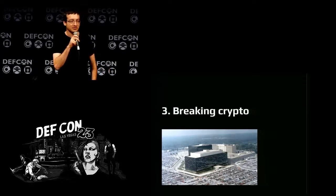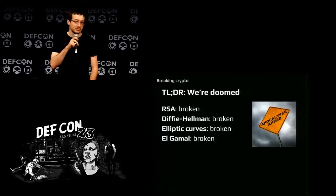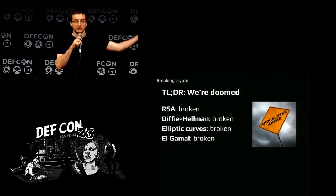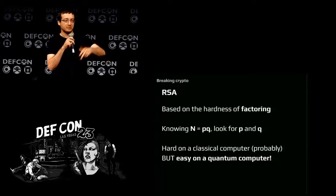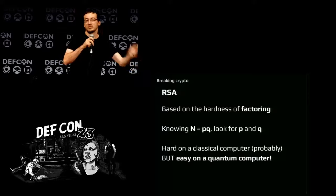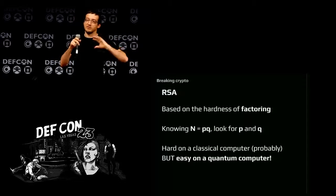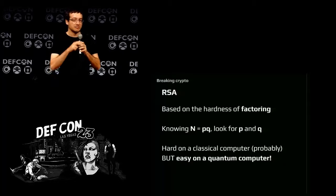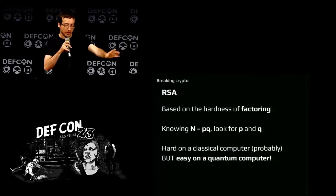Regarding breaking cryptography: the NSA probably doesn't have a quantum computer yet. But if a quantum computer were built tomorrow, RSA would be broken, along with the elliptic curve versions of Diffie-Hellman. RSA is based on the hardness of factoring numbers — if you can factor, you can break RSA. It's hard on a classical computer, and we're pretty convinced it's a hard problem, though there's no mathematical proof. But it's easy on a quantum computer thanks to an algorithm by Peter Shor — Shor's algorithm — which uses a quantum Fourier transform to find a period in a function and thereby factor the number.